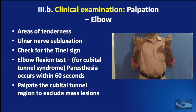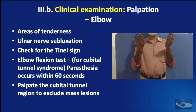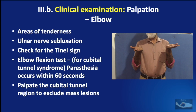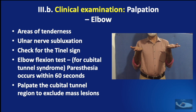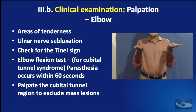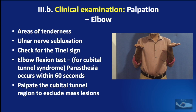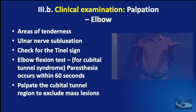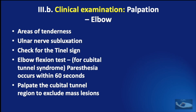For the elbow flexion test, the elbow is kept completely flexed and fully supinated, with the fingers and wrist extended. If paresthesia occurs within 60 seconds, this indicates cubital tunnel syndrome with compression of the ulnar nerve. The cubital tunnel should also be palpated for any mass lesions that may be compressing the nerve.